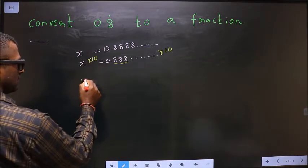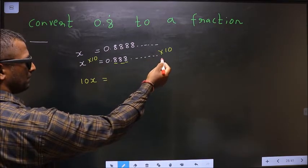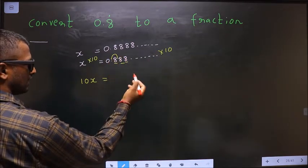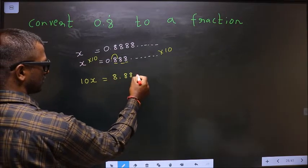x into 10 is 10x. When I multiply this by 10, the decimal will shift one place to the right, making it 8.888 and so on.